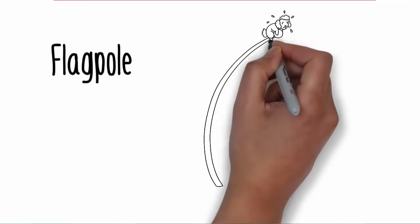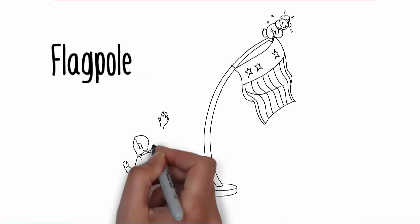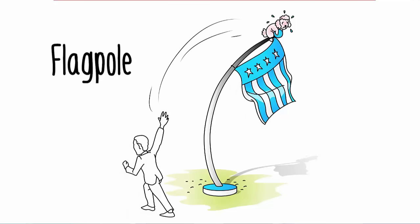Flagpole. Obama throws the poodle away. It flies through the air and lands on the top of a tall flagpole. The weight of the juicy poodle causes the flagpole to slowly topple over.